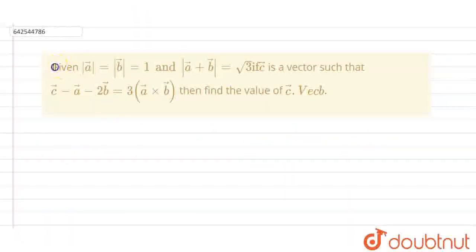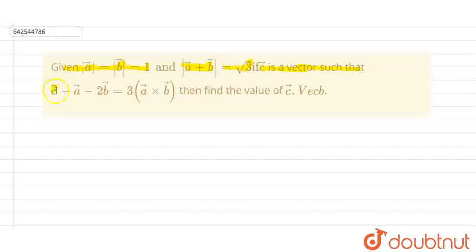Hello everyone. In this question it is given that the magnitude of vector A is equal to the magnitude of vector B and it is equal to 1. And the magnitude of vector A plus B is equal to root 3. Vector C is such that vector C minus vector A minus 2 times vector B is equal to 3 times vector A cross vector B. We have to find the value of C dot vector B.